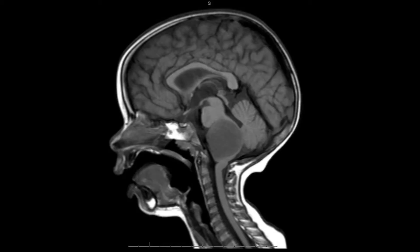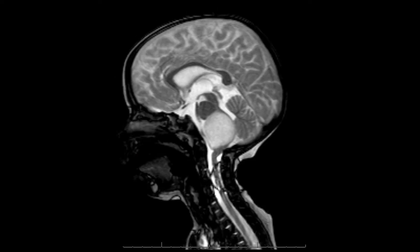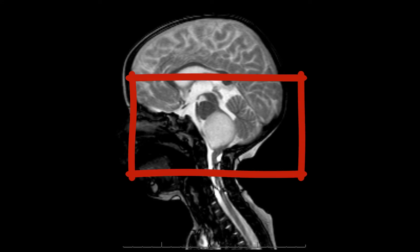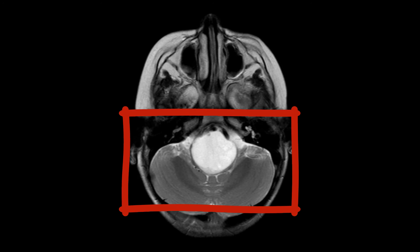Here is a T1 sagittal view — you can see a glioma in the medulla. Here is a T2 sagittal view of the same tumor; it has obstructed the fourth ventricle. And here is an axial view of the brainstem glioma.